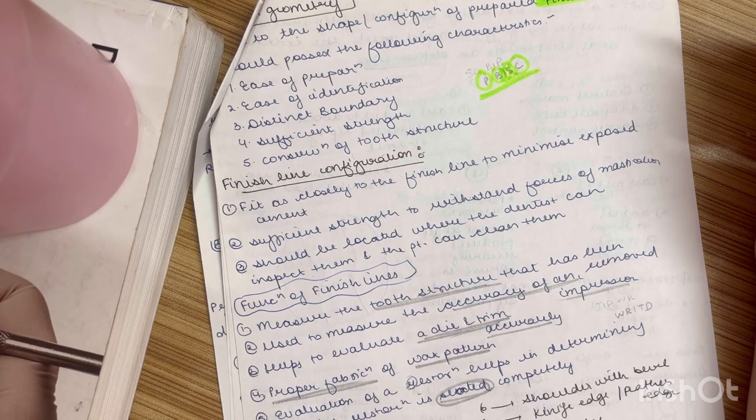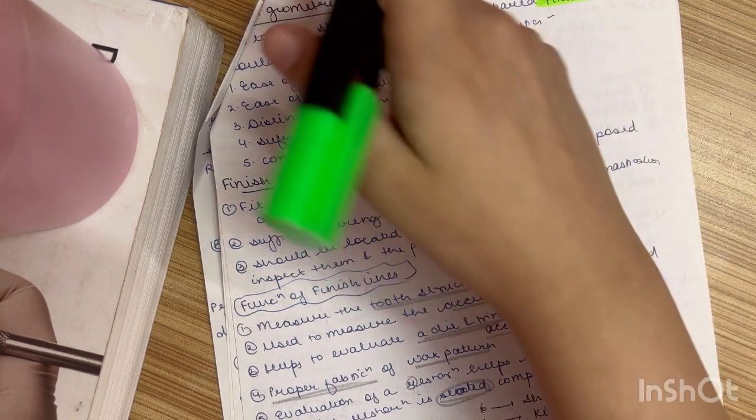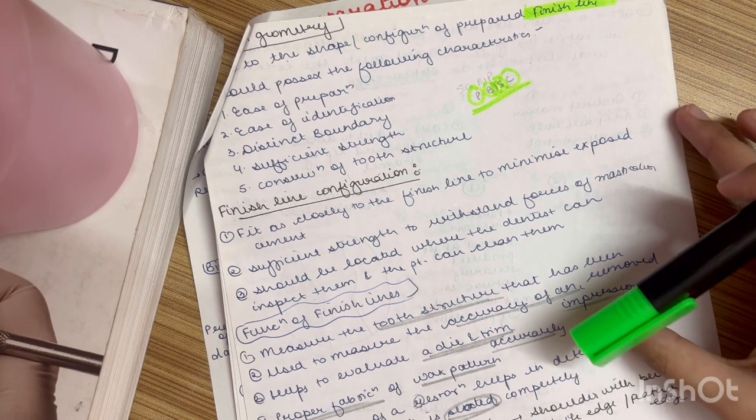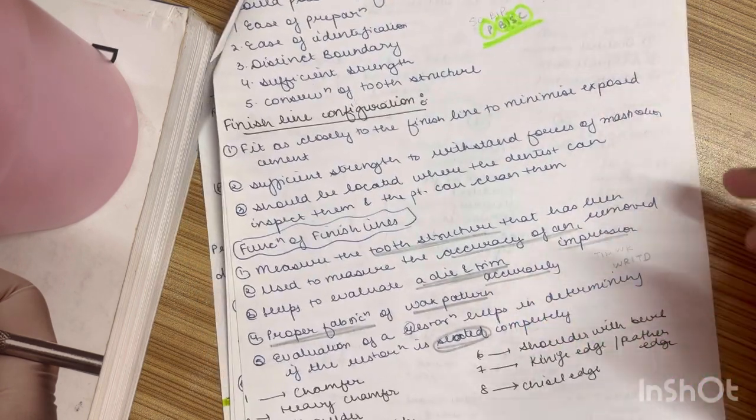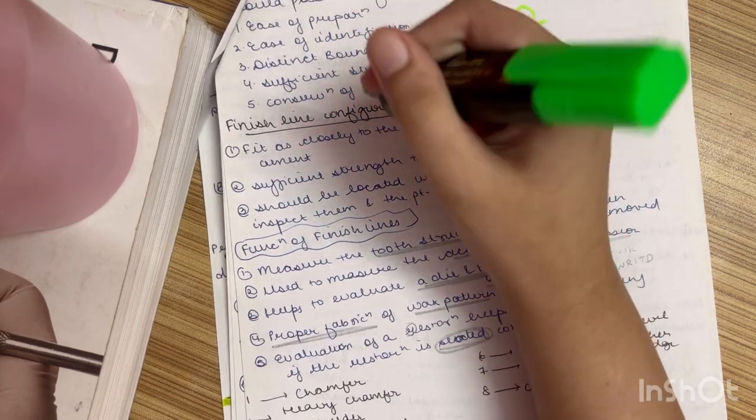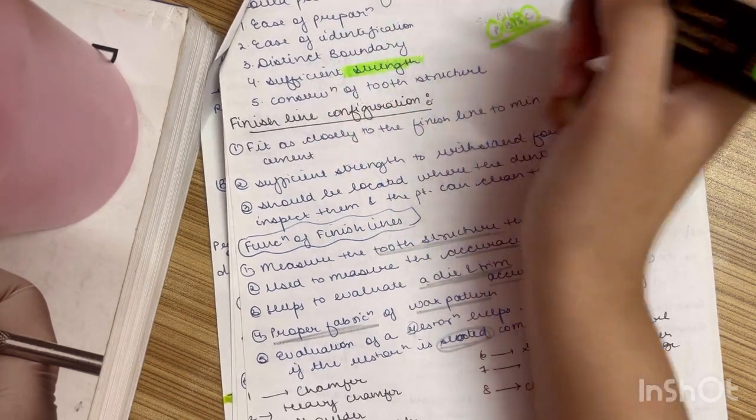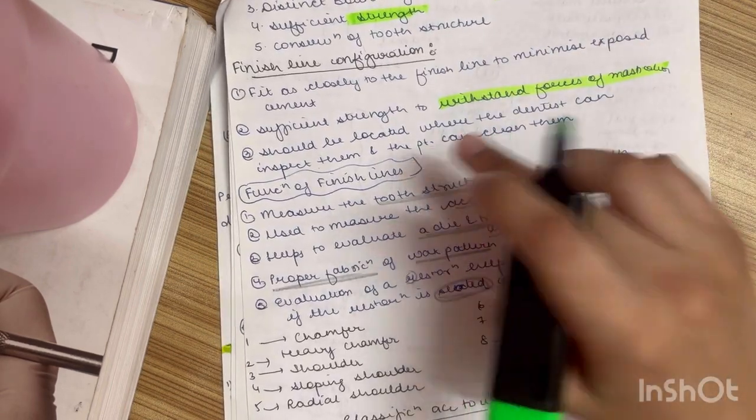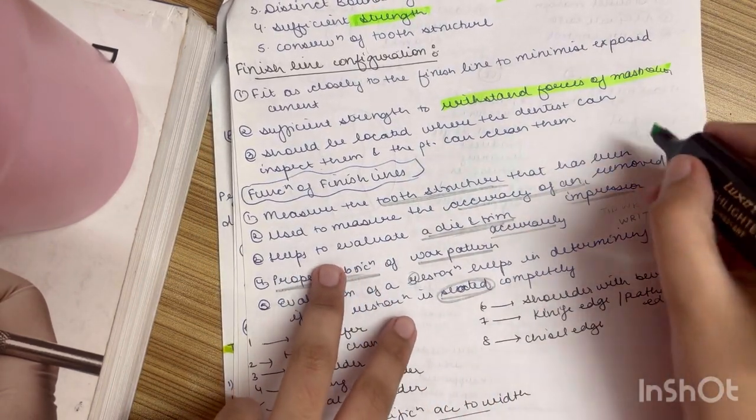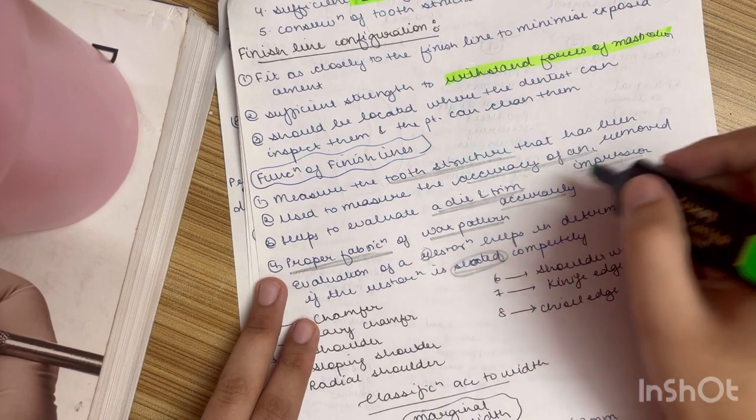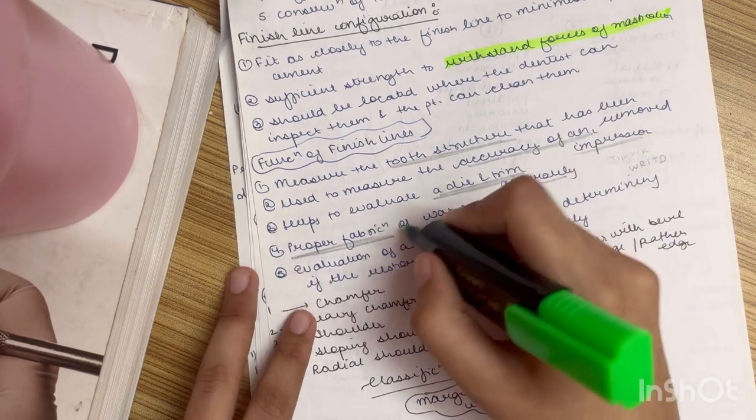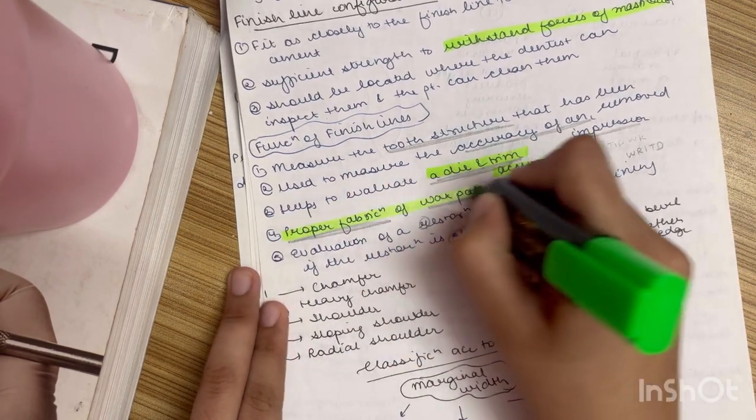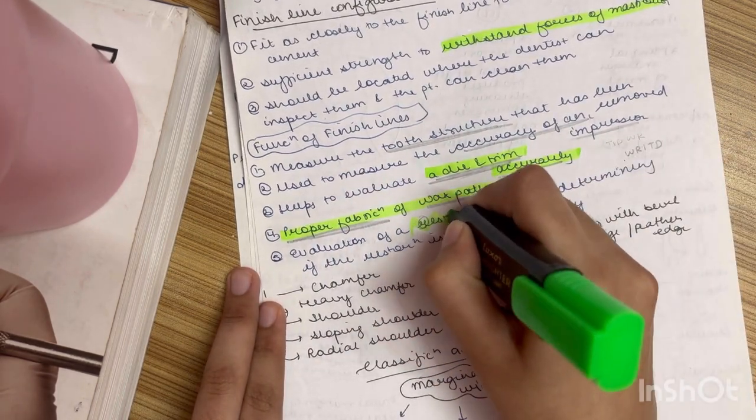Now what is finish line? It is something as I showed you in the previous diagram. So it fits closely to the finish line to minimize exposed cement. Now why do we need sufficient strength is to withstand the forces of mastication. Now what is the function of finish line? It measures the tooth structure that has been removed. Used to measure the accuracy of an impression. Helps to evaluate die and trim it accurately. Proper fabrication of the wax pattern and evaluation of the restoration.